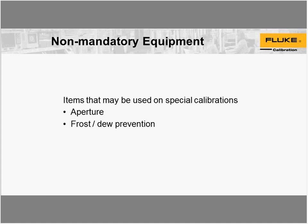There's some non-mandatory equipment that may be used on special calibrations. One such item is an aperture — there are a few models of IR thermometers that do require an aperture for calibration. For Fluke models, I'm thinking of the Raytec MX series — MX2, MX4, MX6 — they required an aperture and a certain measuring distance. Those models became the Fluke 572, 574, and 576. I don't see a lot of those models in the field in the United States, though I was in an email conversation with a customer a few weeks ago who does get those models in periodically for calibration.